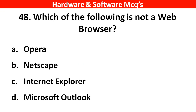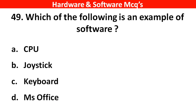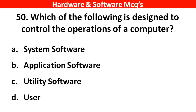Next question: Which of the following is not a web browser? The right answer is option D — Microsoft Outlook. Next question: Which of the following is an example of software? The right answer is option D — MS Office. Next question: Which of the following is designed to control the operations of a computer? The right answer is option A — system software.